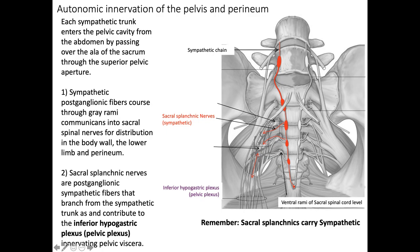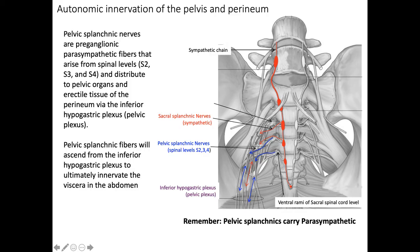The sacral splanchnic nerves carry sympathetic innervation to the pelvic structures and contribute to the inferior hypogastric plexus, which innervates the pelvic viscera. The sacral splanchnic nerves travel alongside the internal iliac arteries. It's important to remember that the sacral splanchnic nerves carry sympathetic fibers, while the pelvic splanchnic nerves carry parasympathetic fibers to innervate the abdominal viscera, pelvic organs, and erectile tissue in the perineum.